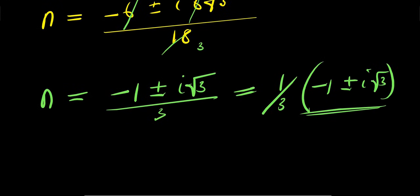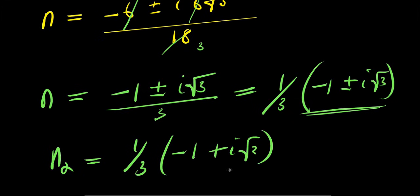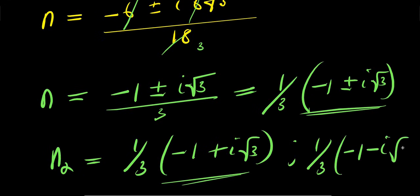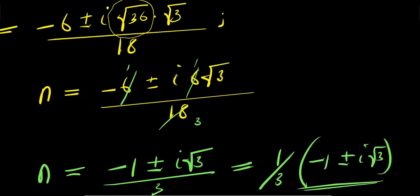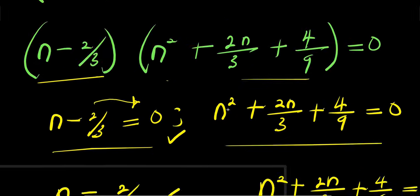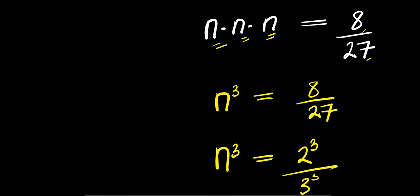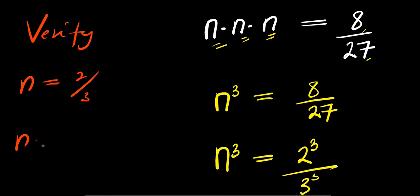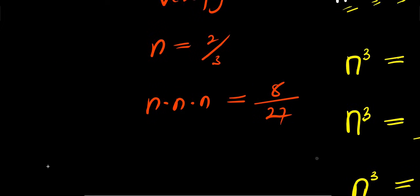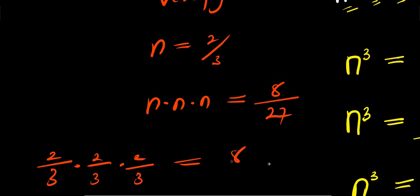So we have two complex values for n. n₂ equals (1/3)(negative 1 plus i√3) and n₃ equals (1/3)(negative 1 minus i√3). So these are the two complex values for n and one real value which is 2/3. If you want to verify, you can insert the real value: (2/3) times (2/3) times (2/3) equals 8/27. That is 2 times 2 is 4, times 2 is 8, over 3 times 3 is 9, times 3 is 27. So 8/27 equals 8/27. ✓